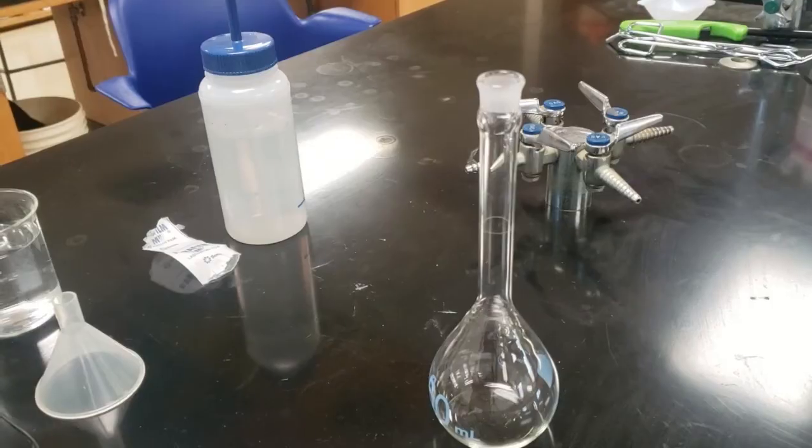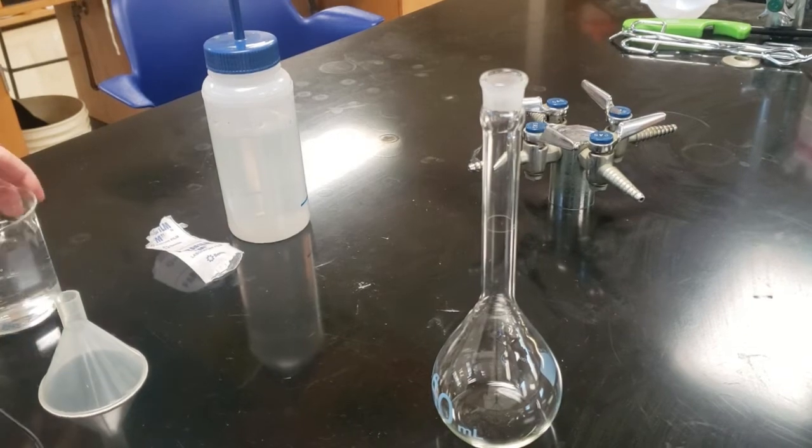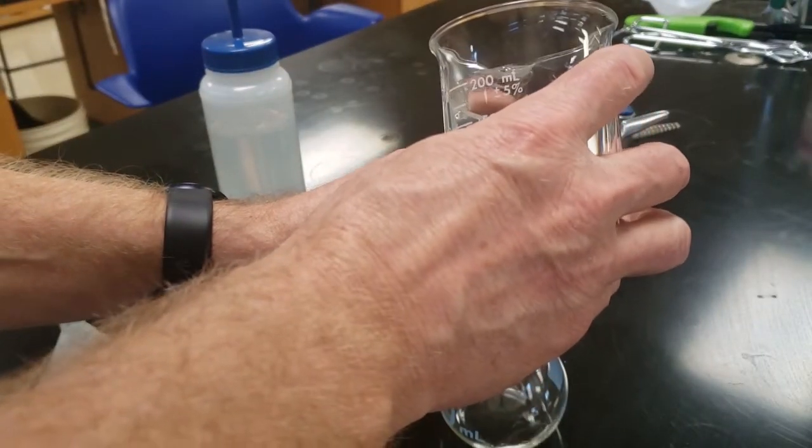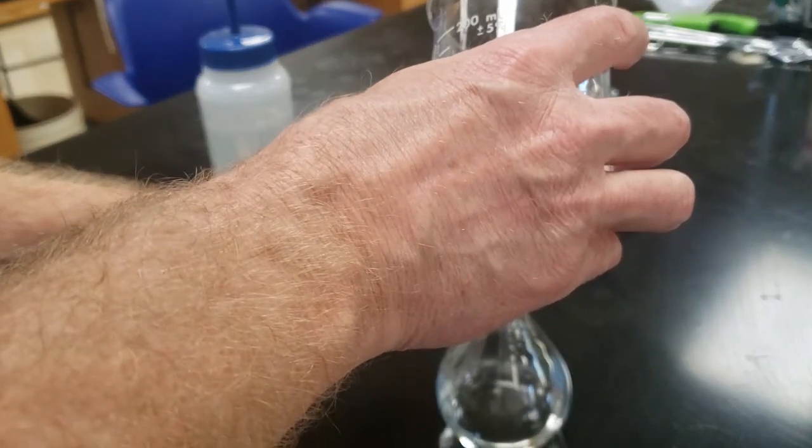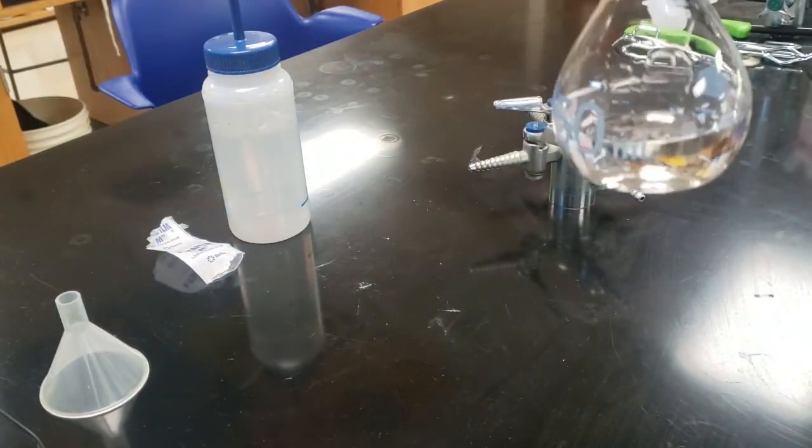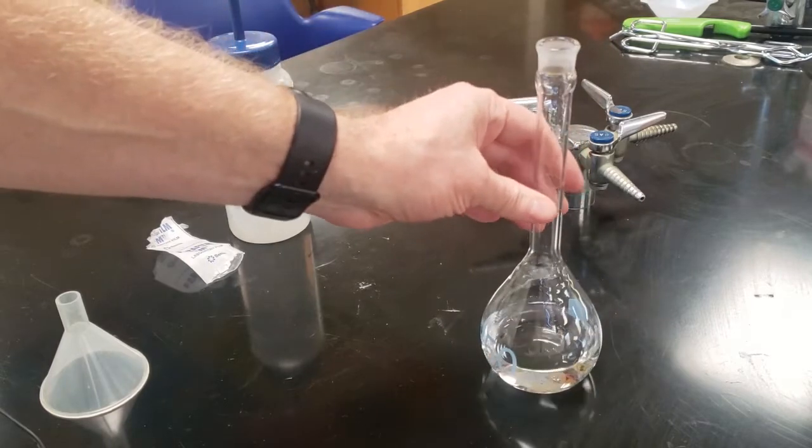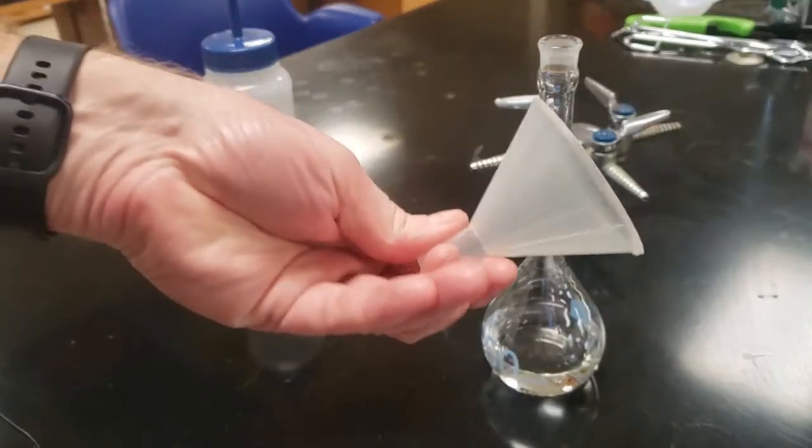We're going to get the 250 milliliter volumetric flask. We're going to pour some distilled water in there. We want to fill about halfway up. It's not a measured halfway. We just want to put some liquid in there so that when we put the ionic solid in, it will be able to dissolve into water. Also, we don't want it too full because we want to shake it up and swirl it around. If it's too full, it's not going to be able to have this agitation.